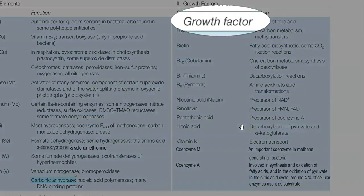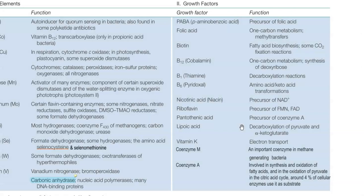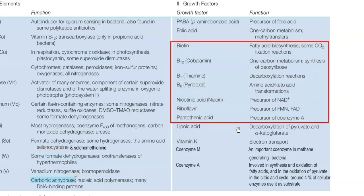Finally, we look at some points related to growth factors. Para-aminobenzoic acid is required as a precursor for folic acid synthesis. Folic acid is mainly required for one-carbon metabolism and plays a role in methyl transfer reactions. Next are the group of B vitamins: biotin, B12, B1, B6, and nicotinic acid.